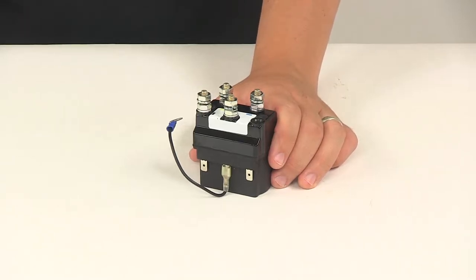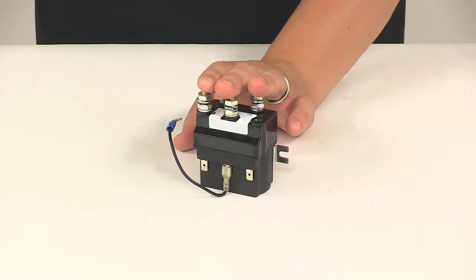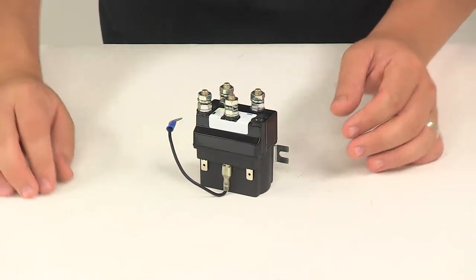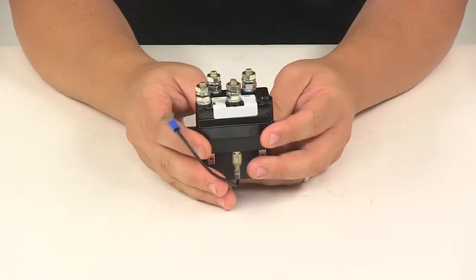Today we're going to be taking a look at the Bulldog winch replacement OE contactor. This is an exact replacement OE contactor for trailer winches 15017 and 15019. It's going to install exactly the same as the original.